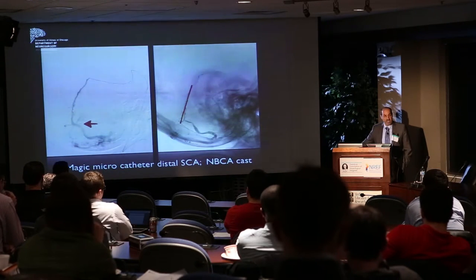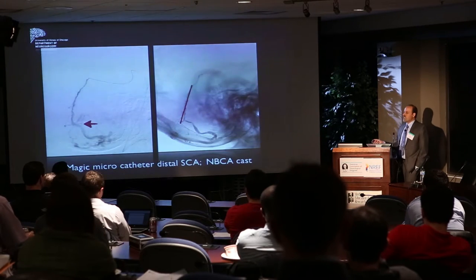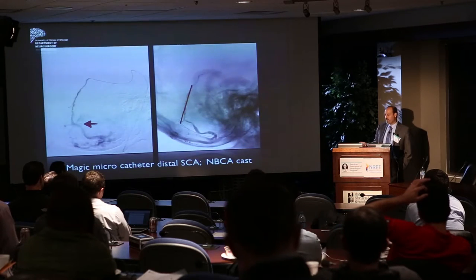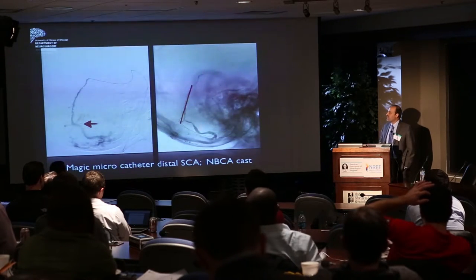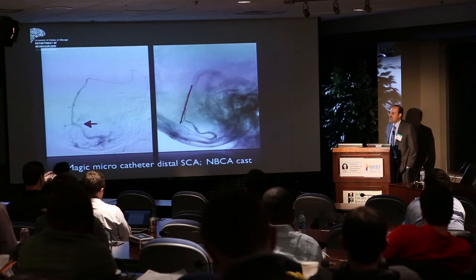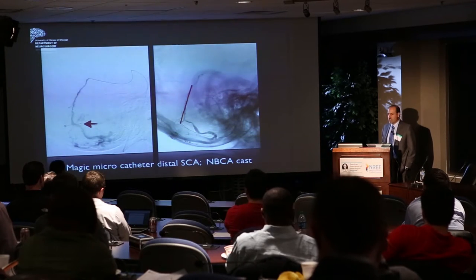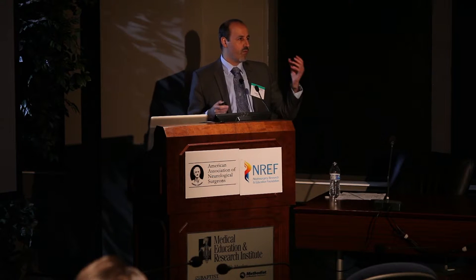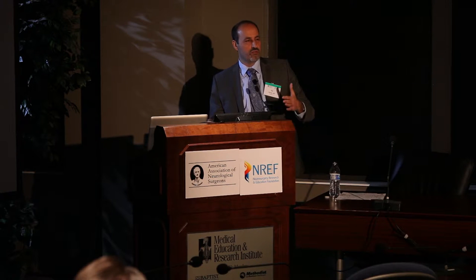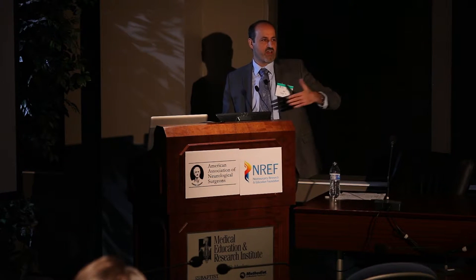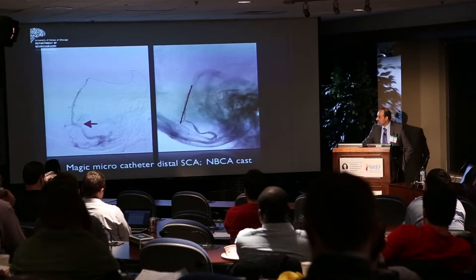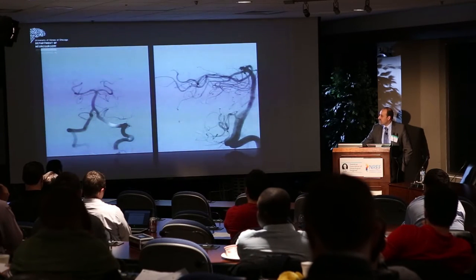This is the glue cast after embolization: glue is injected all the way down into the vein, closing it, and also filling other feeders. This case uses dextrose push at 1-to-6 dilution. Because distal access is required, diluted glue is used—more concentrated glue polymerizes faster while more diluted glue polymerizes more slowly and permeates further distally, which is the goal here.